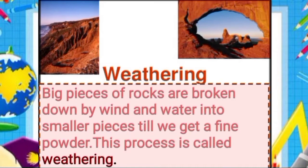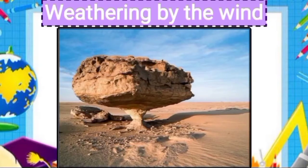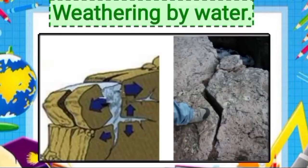Weathering is the process where rock is dissolved, worn away or broken down into smaller and smaller pieces. There are mechanical, chemical and organic weathering processes. Weathering is the breaking down of rocks, soil and minerals as well as wood and artificial material through contact with the earth's atmosphere, water and biological organisms. Big pieces of rocks are broken down by wind and water into smaller pieces until we get a fine powder — this process is called weathering.